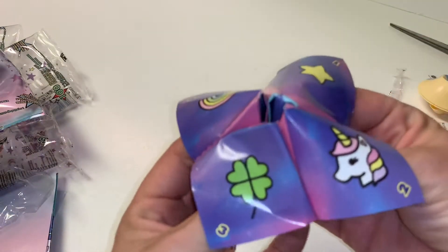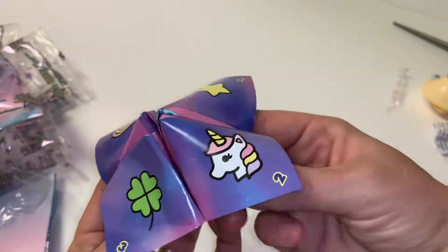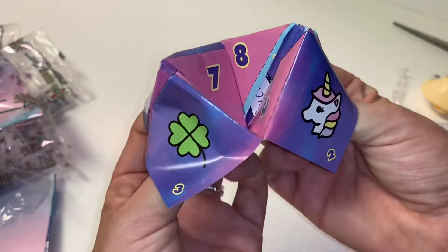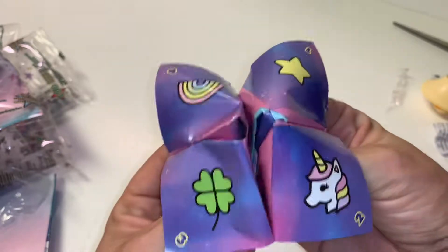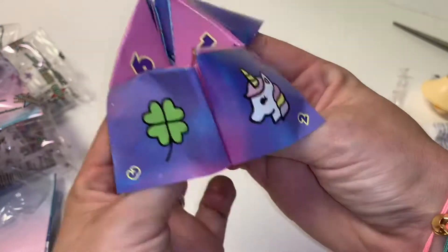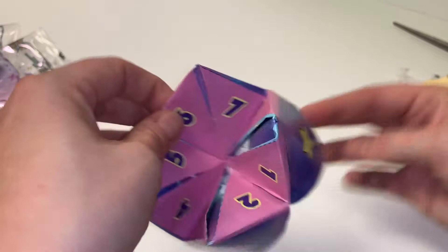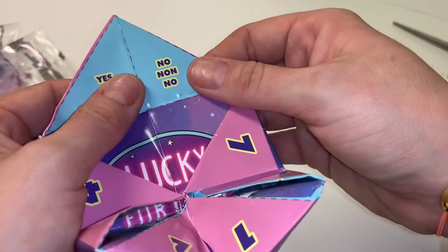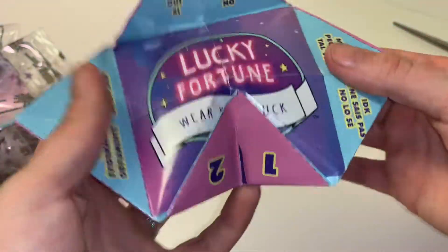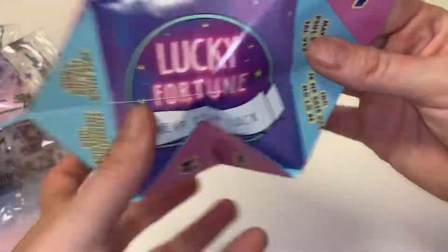So like it'll ask you the question like, am I going to find more Shopkins tomorrow? And I'll pick a number. I'll pick the unicorn. So I'll do two. So you go one, two. Then I pick a number. I'm going to pick number seven. One, two, three, four, five, six, seven. And then I'll pick number six. And it says no. Oh no. I'm not going to find Shopkins tomorrow. That's okay because I wasn't going to go look tomorrow anyway. So that's fine.